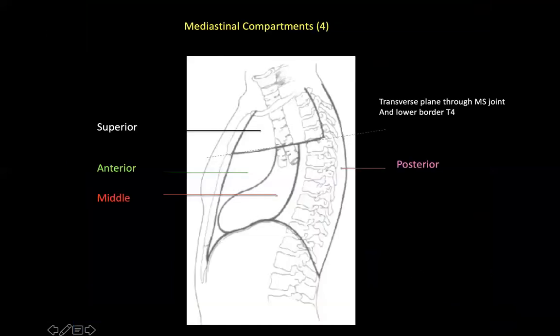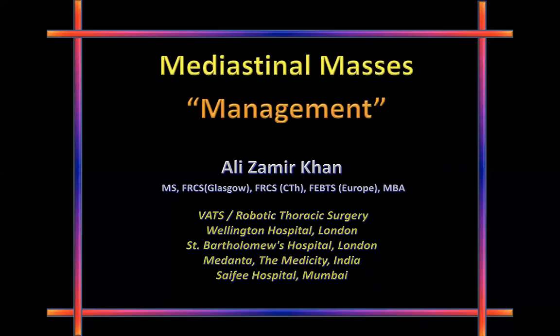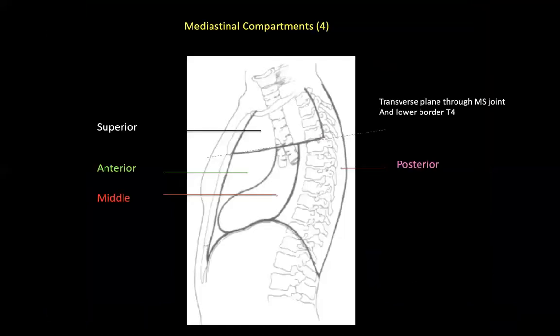Vivek, what are the various segments of the mediastinum? The classical division of the mediastinum is divided into superior and inferior. The dividing line passes between the manubriosternal angle anteriorly and posteriorly passes below the T4 level — between T4 and T5. T4. Correct. So that's superior and inferior.